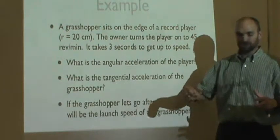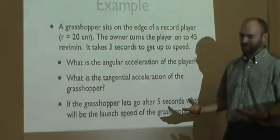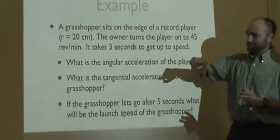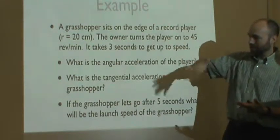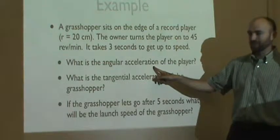And you're hoping that the grasshopper will just jump off because it doesn't want to be there, or you're just trying to feel rather mean and feel like making the grasshopper sick. So you do that. You crank it up and the grasshopper is spinning around. And the question is, what is the angular acceleration of the record player?